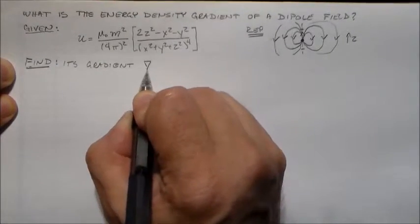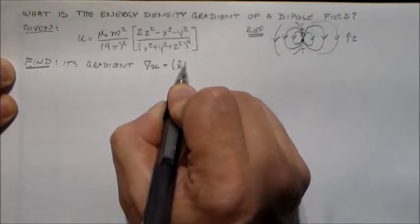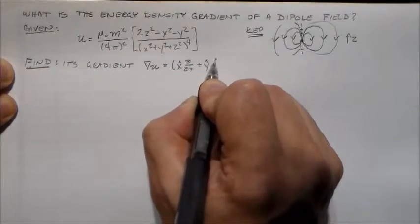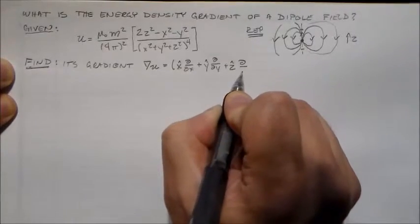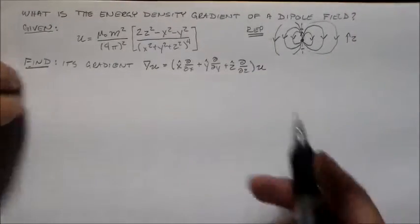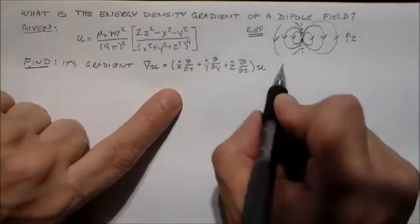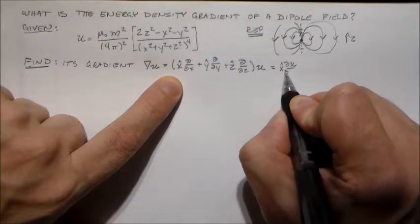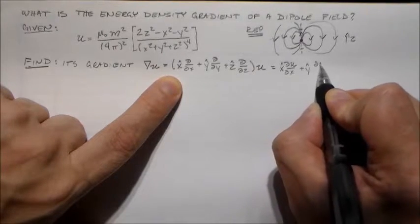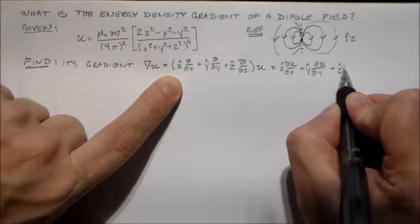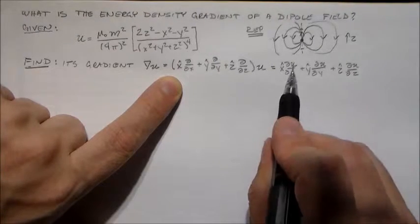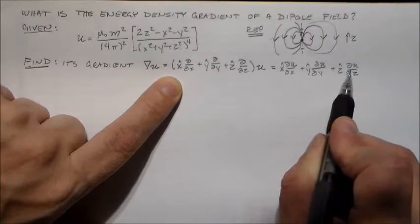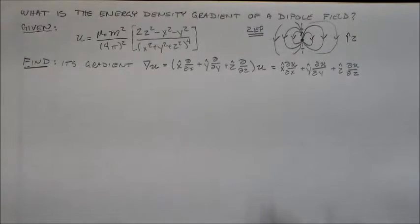In the gradient, we write del u. Del is just this operator: in the x direction you take the x derivative, in the y direction you take the y derivative, and in the z direction you take the z derivative, times u. When you do this, you foil u into the vector. So in the x direction we have du/dx, in the y direction we have du/dy, and in the z direction we have du/dz. It's just basically the slope of the function with respect to that particular parameter in each of the vector components. That's all it is — quite simple.